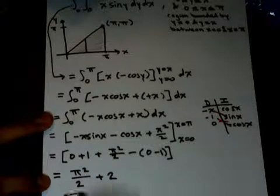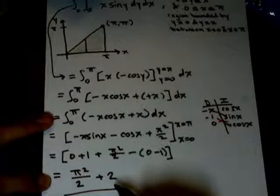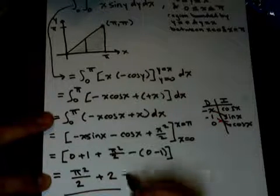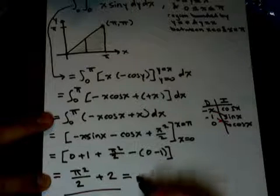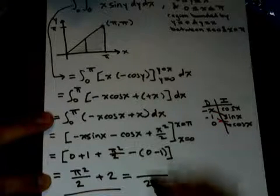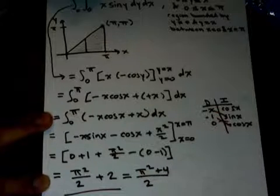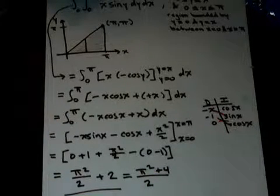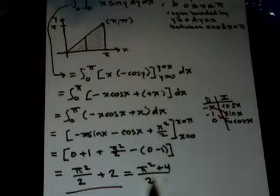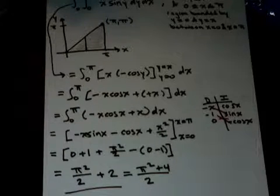And we're done, but if you want to combine this into one fraction, you can put this as pi squared plus 4 over 2. And this is what we get after we integrate this out.